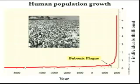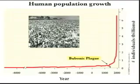There are blips along the way — blips registering on this curve in the form of things like the bubonic plague, which wiped out a huge percentage of Europeans and many other people around the world before it even got to Europe. This was a bacterial disease transmitted through the skin, and fleas were a big part of it. So this was a huge event that registers, but very few other events are registered on a graph at this scale.